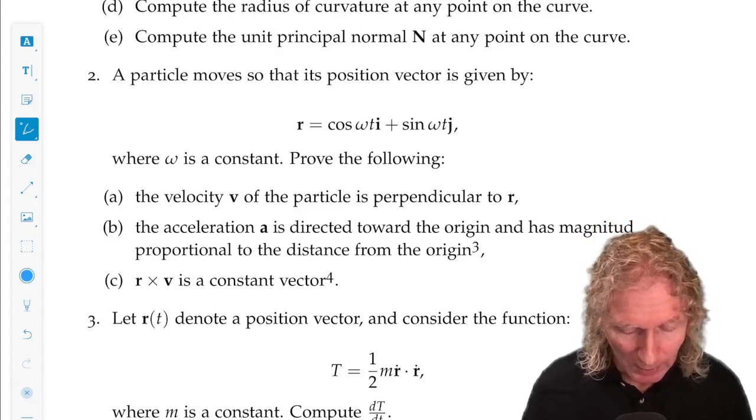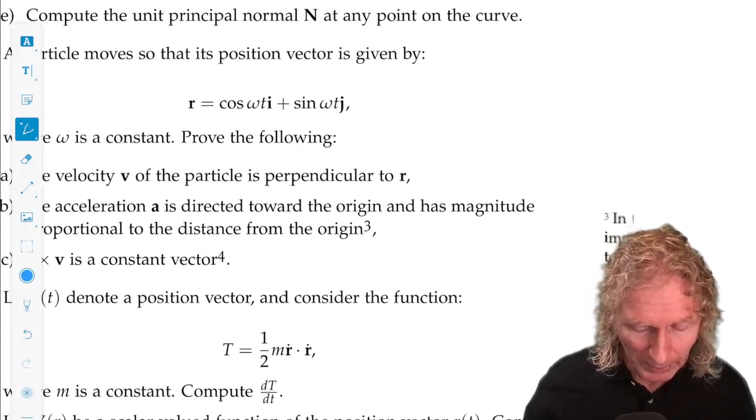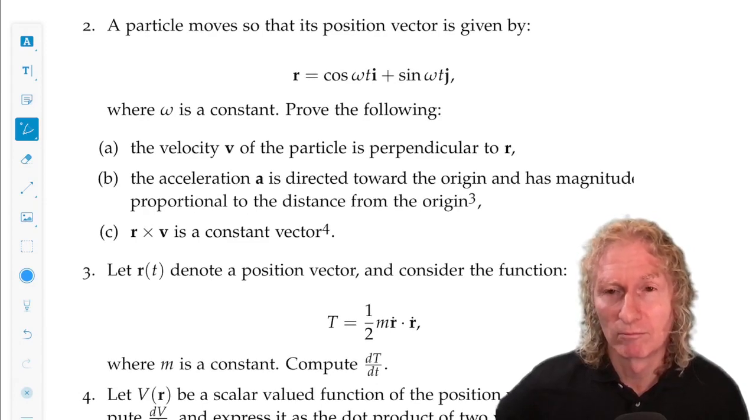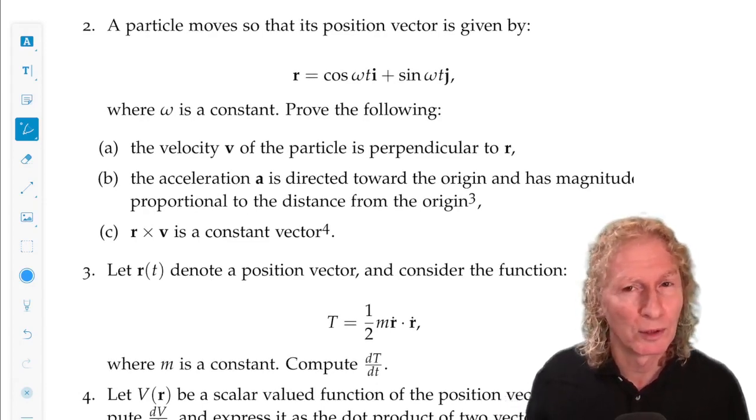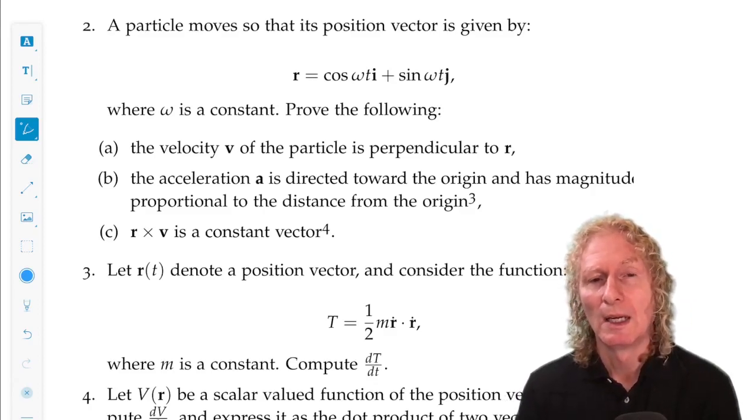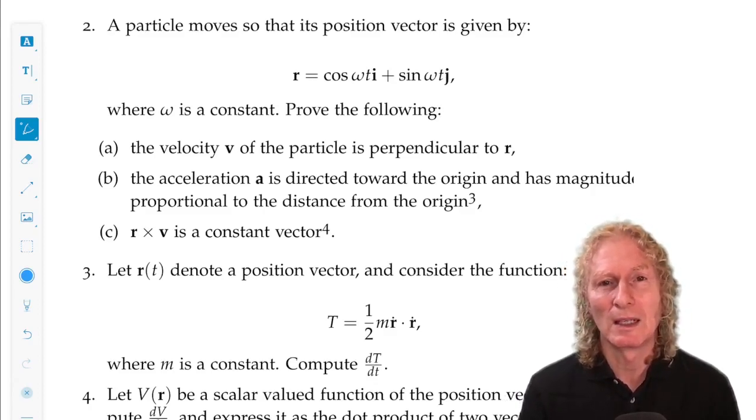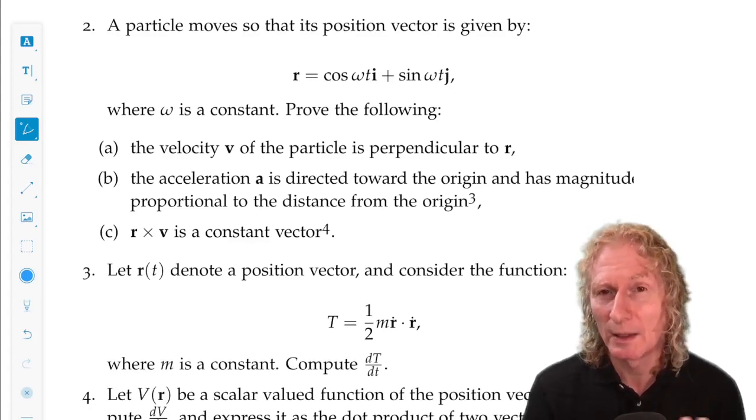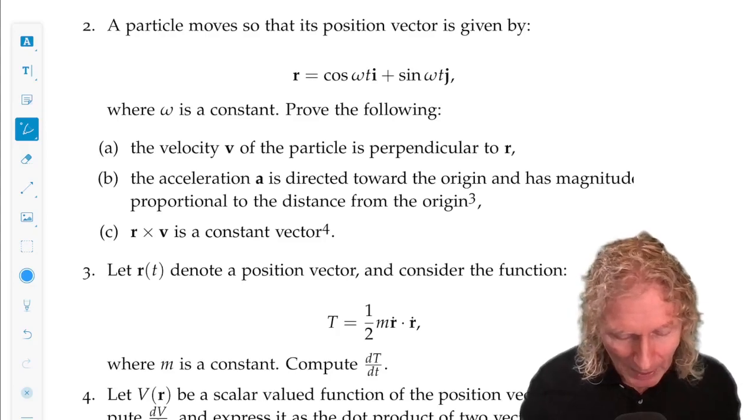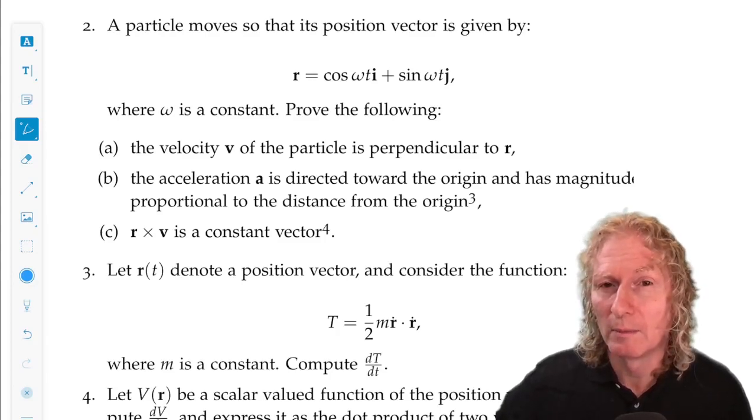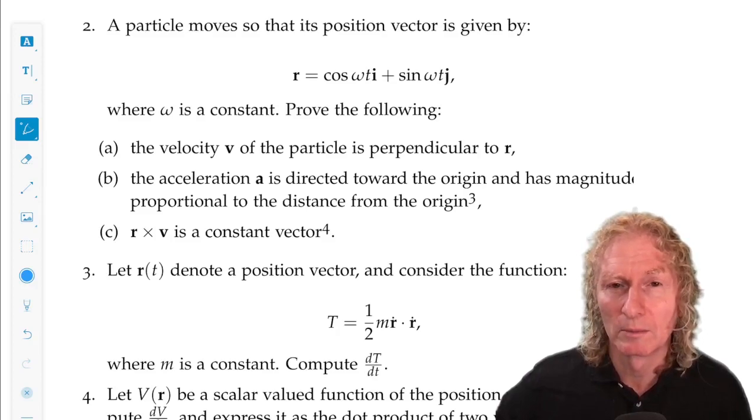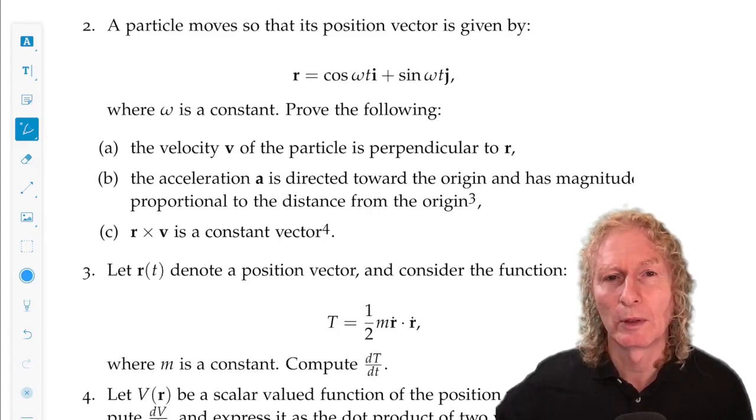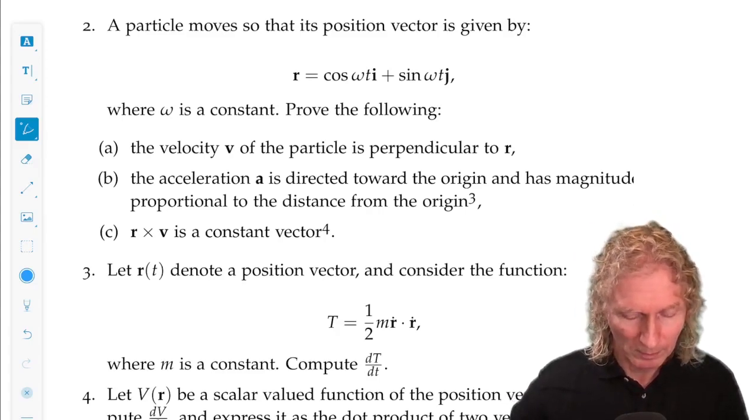The acceleration is directed towards the origin and has magnitude proportional to the distance from the origin. Those are just straightforward calculations to do. And you need to know the right calculations to do and interpret them correctly. And then show that R cross V is a constant vector. This is going to come back in when we learn about central force motion towards the end of the course.